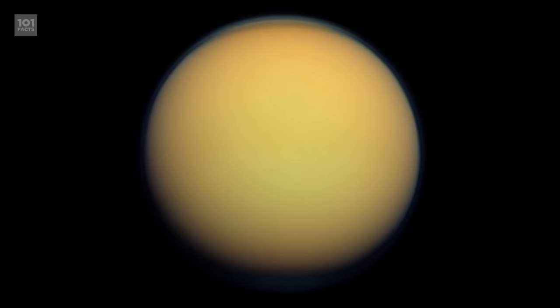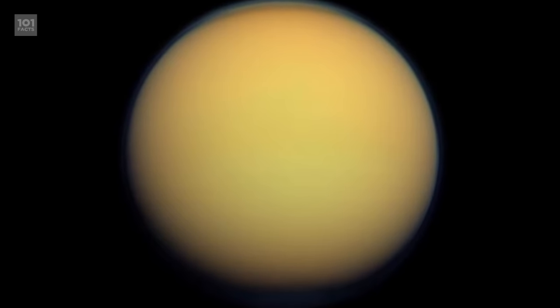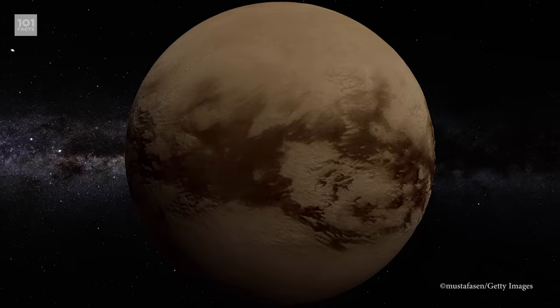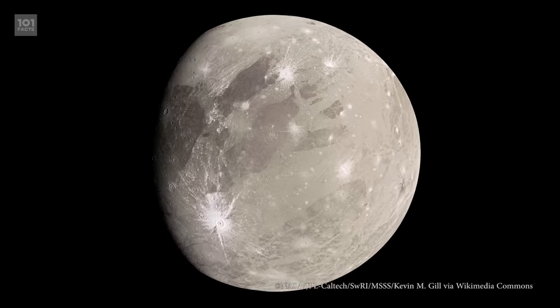Saturn's largest moon is called Titan, and is actually slightly bigger than the planet Mercury. It's also the second-largest moon in the entire solar system, falling behind Jupiter's Ganymede.